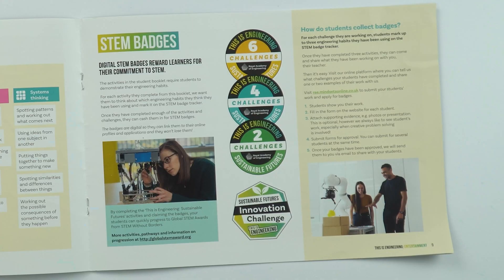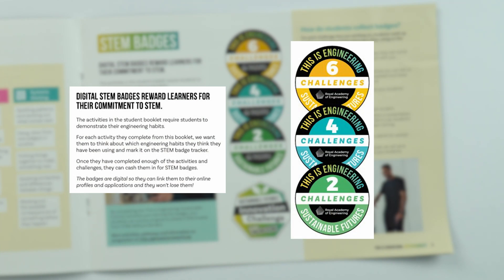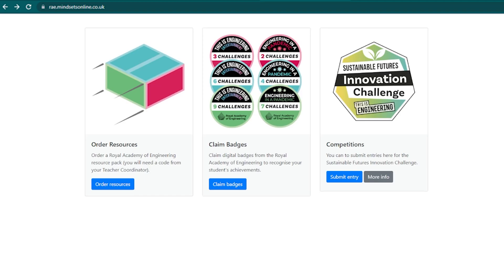Alongside the engineering habits of mind, we also want to reward learners for their commitment to STEM through digital STEM badges. There's a STEM badge once they've completed two of the challenges, four of the challenges, and six of the challenges. Visit rae.mindsetsonline.co.uk to submit your students' work and apply for the badges.